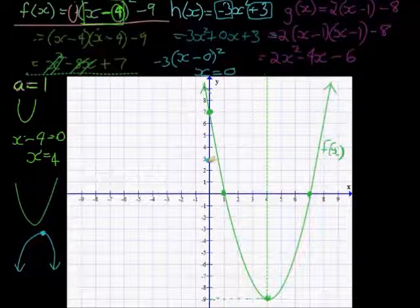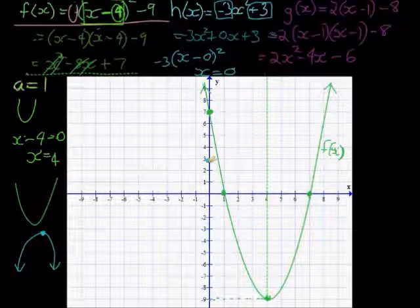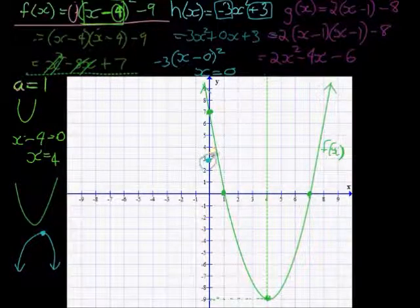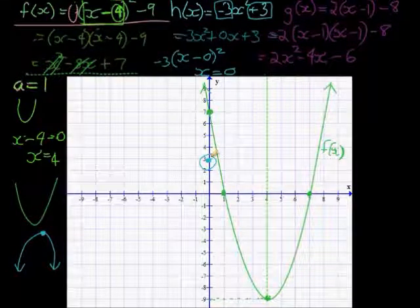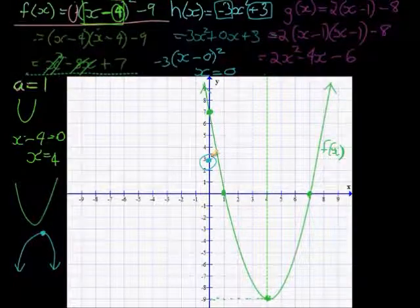And finally, we want the intercept. As you can see, we already have the y-intercept. So now we just need to find the x-intercept. How do we do that? We make y equal to 0.